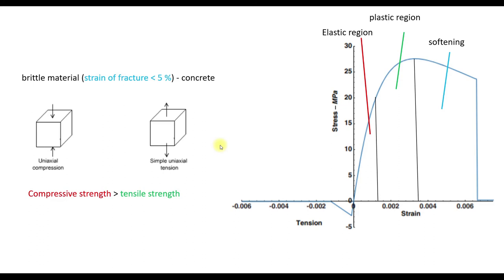Next we have the compressive and the tensile behavior. So, concrete is a brittle material. That means, in general, that the strain of fracture is less than 5%. And in this case, we have a much higher compressive strength compared to the tensile strength.